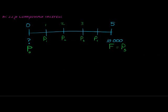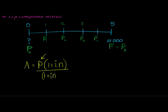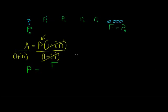To answer this, all we're doing is taking the simple interest formula A equals P times (1 plus i times n) and solving for P. To get P on its own, I divide both sides by (1 plus i times n). The bracket cancels on the right, leaving us with a new formula: present value equals future value divided by (1 plus i times n). That's the formula for present value using simple interest.